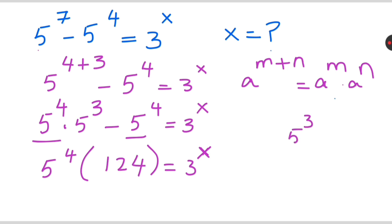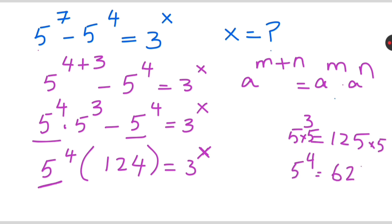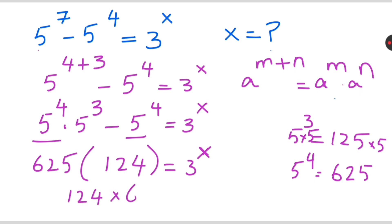5 raised to 4 of 3 is 125. Now we need to find 5 raised to 4 of 4 — that means we multiply both sides by 5, and 125 times 5 gives 625. So here we have 124 times 625, and that is equal to 3 raised to 4 of x.